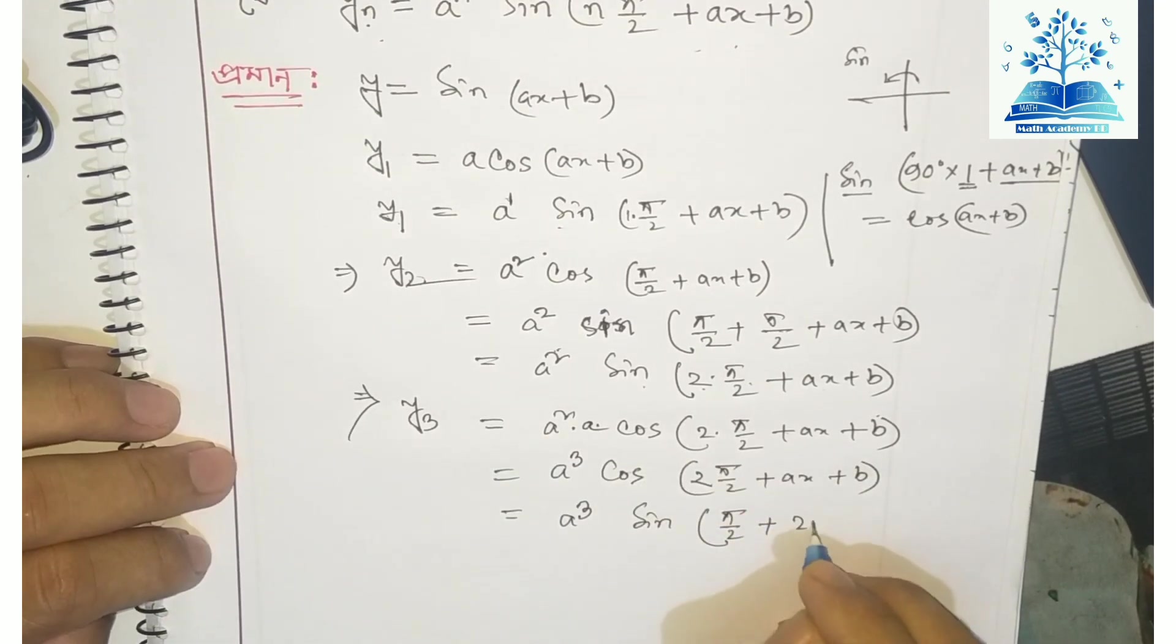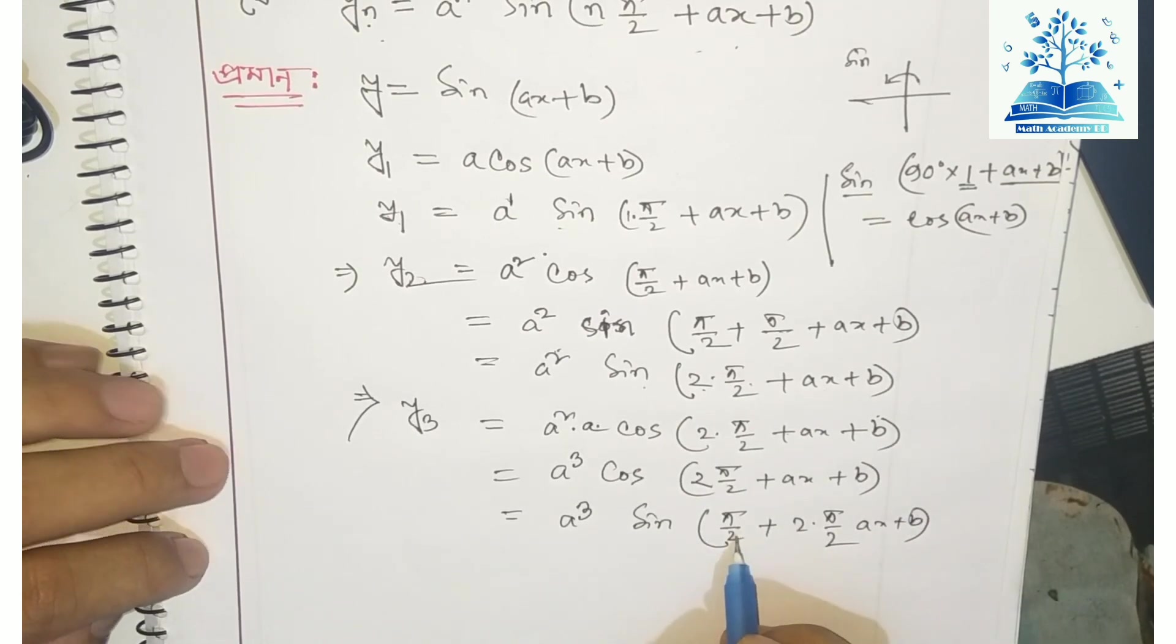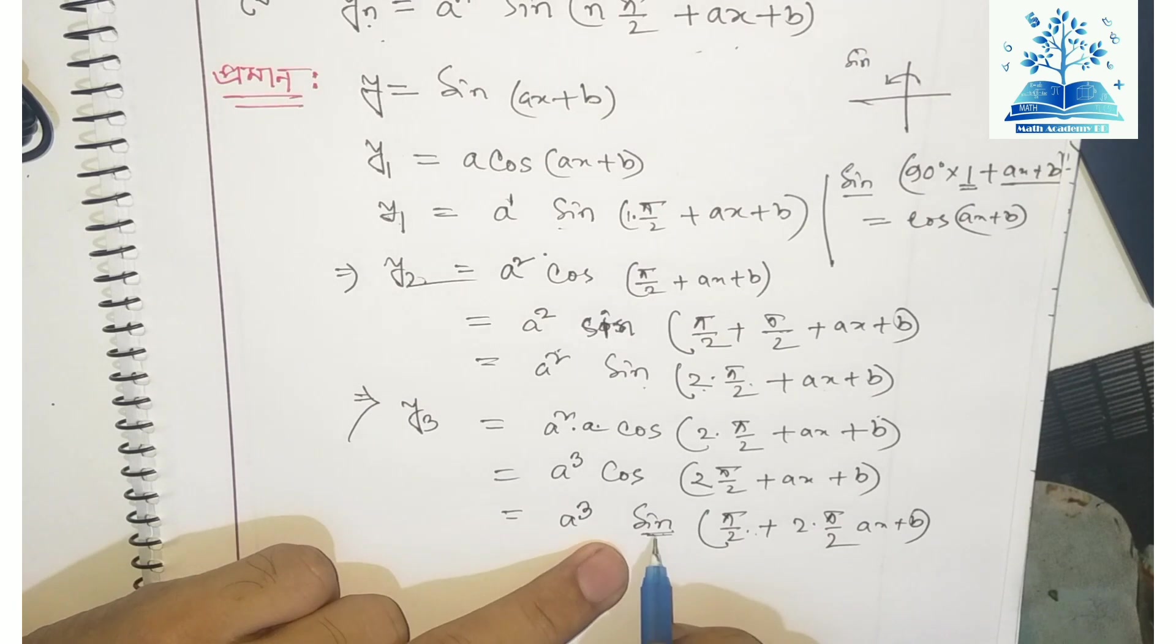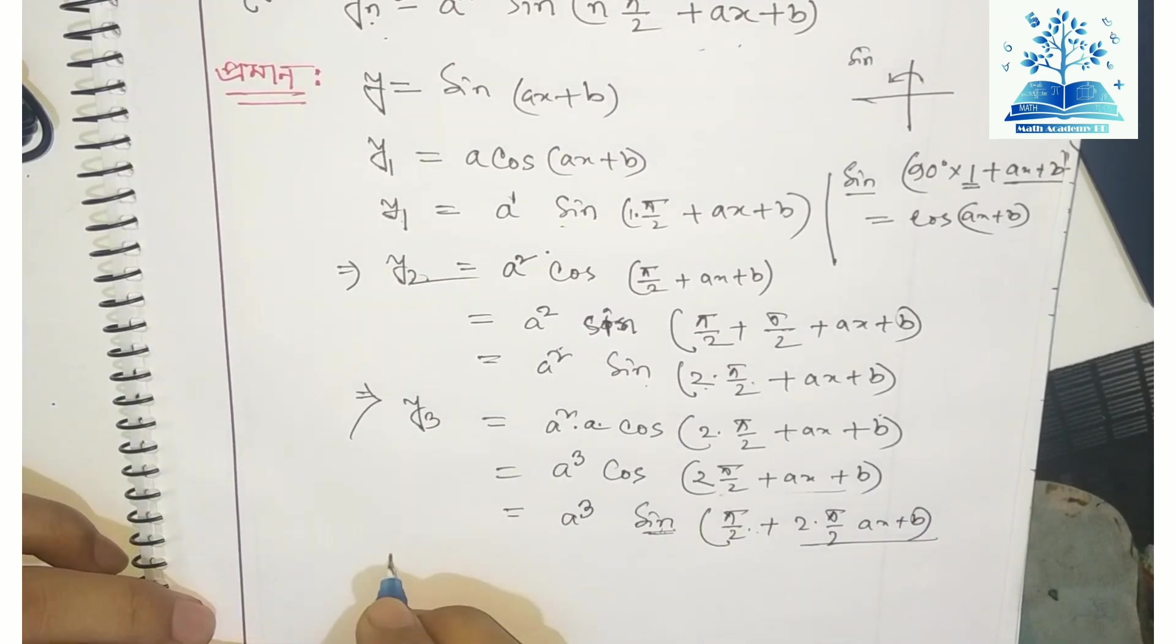We can write this as a³ sin(3π/2 + x + b). When we convert cos to sin by adding π/2, we get the pattern.